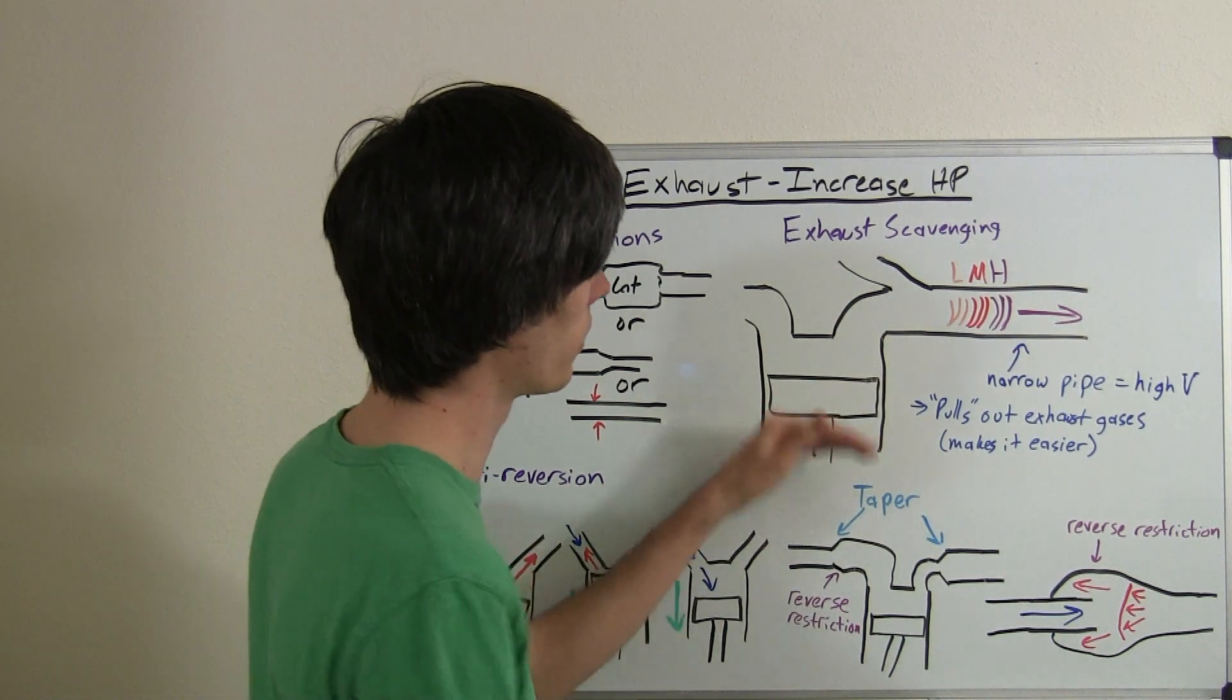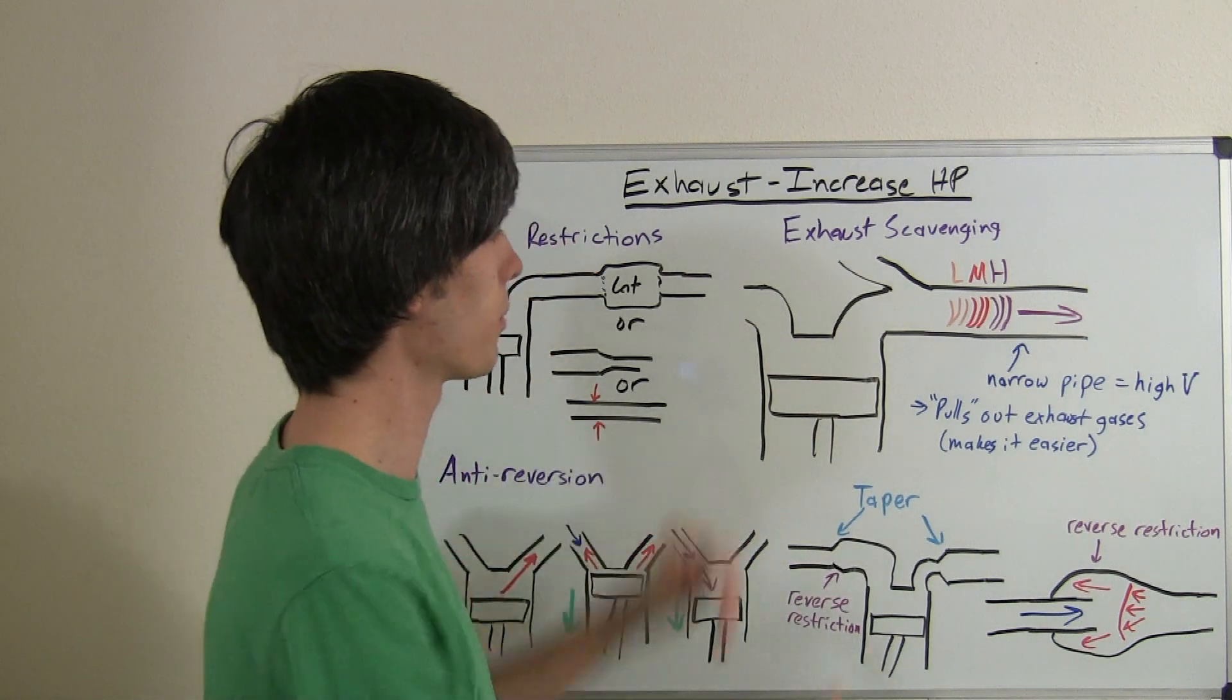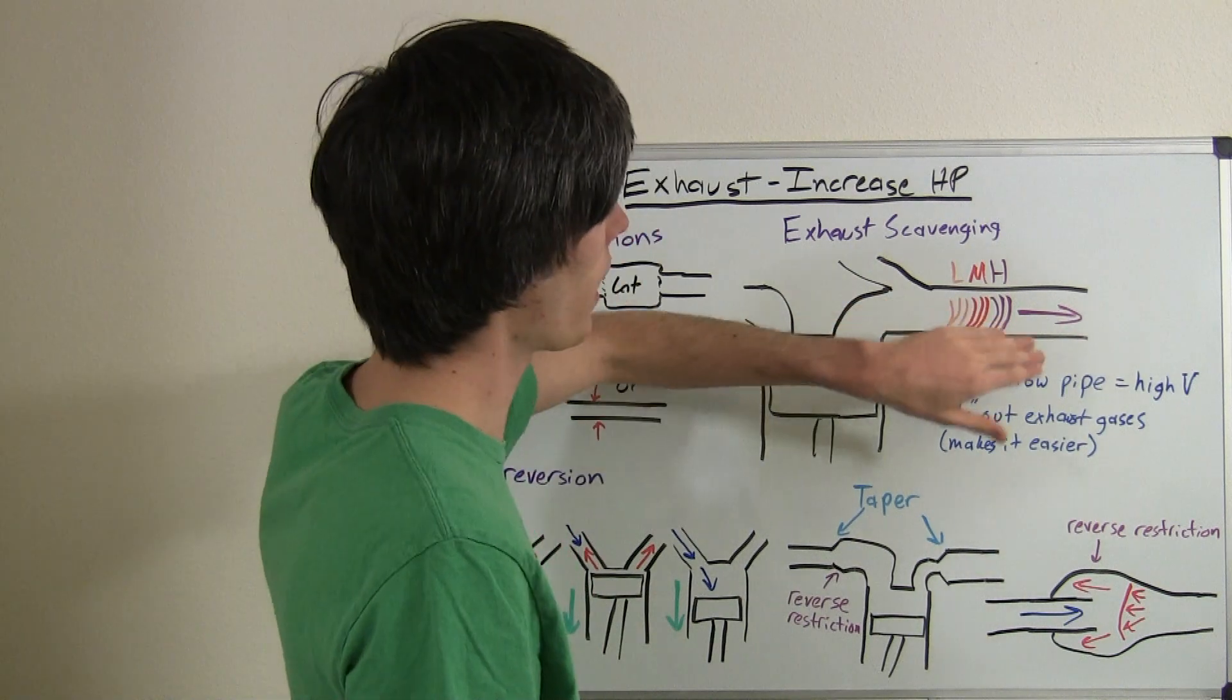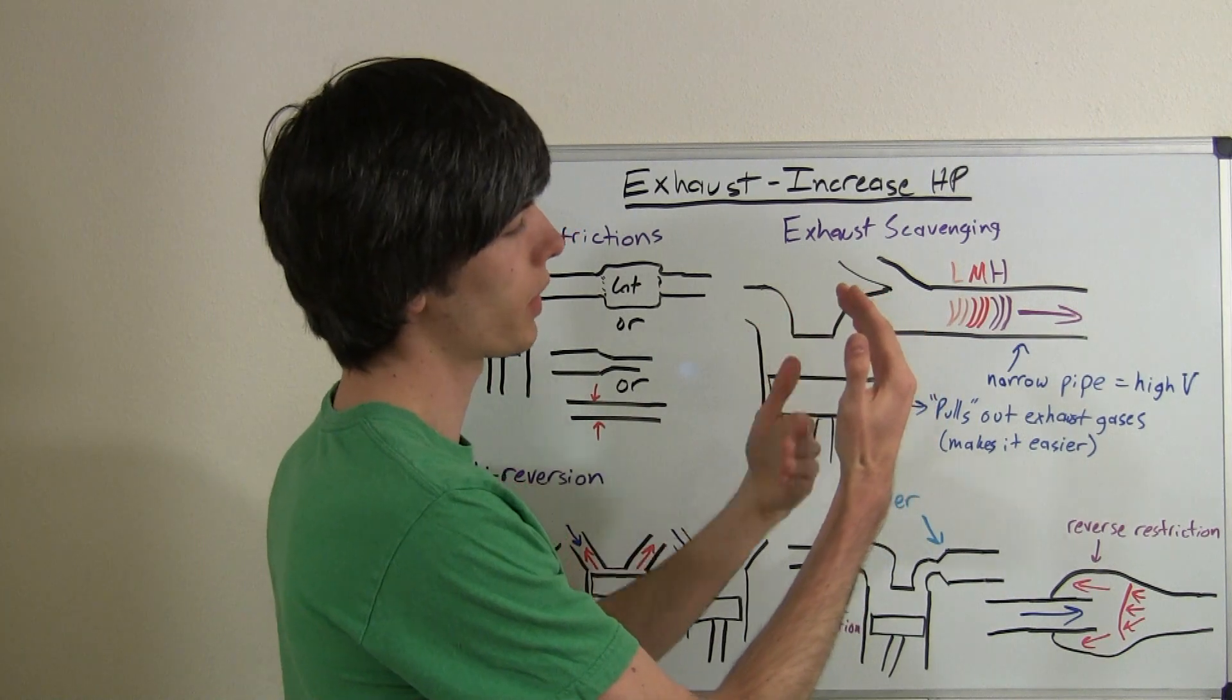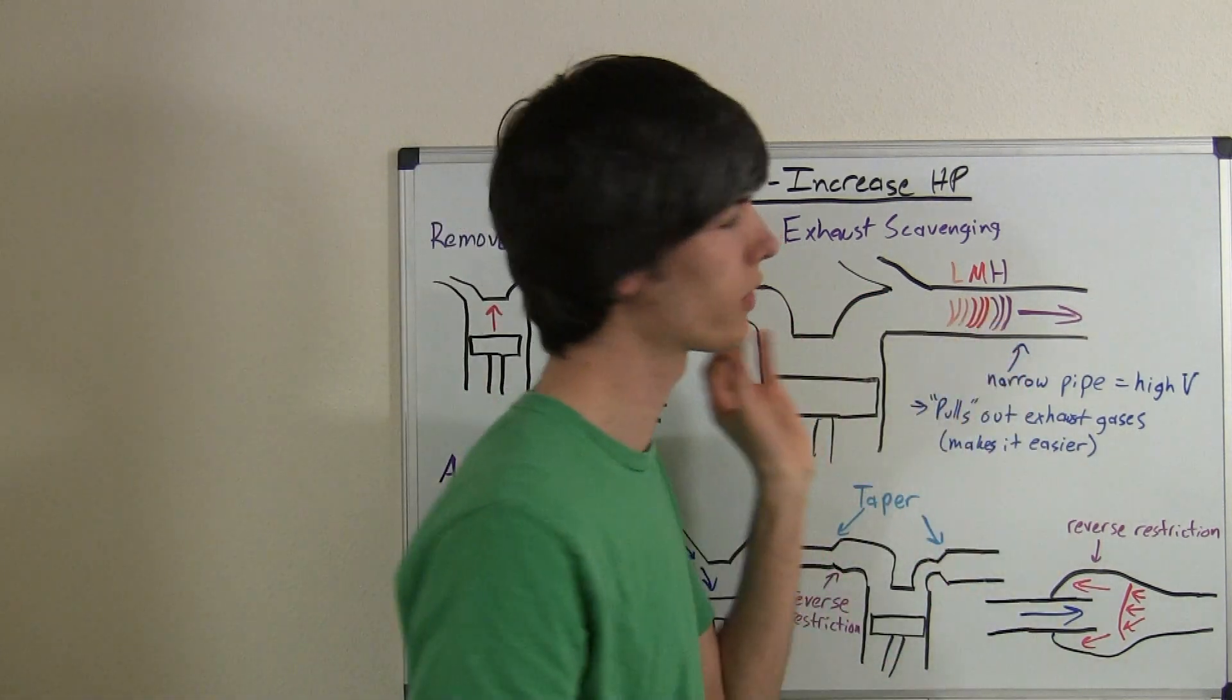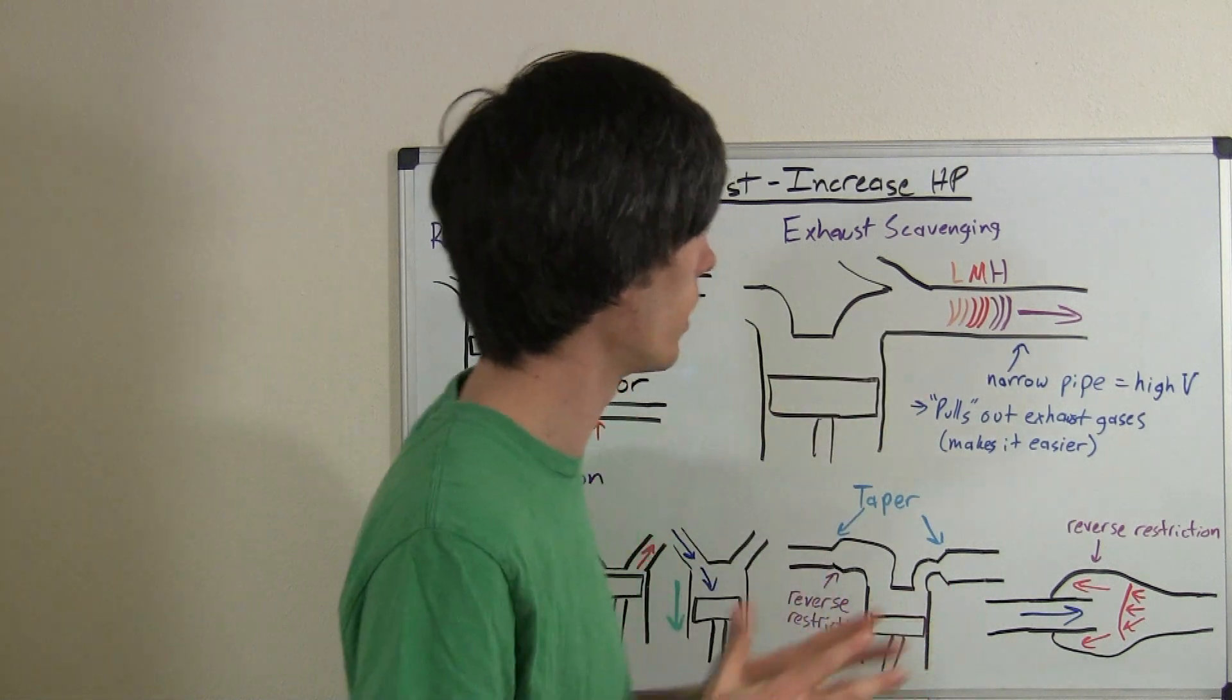With exhaust scavenging what happens is you're going to have exhaust gases pump out of your car in pulses. So once the piston slams up it's going to send out this pulse of air basically. And that pulse of air, since it's traveling very quickly, at the front of it it's basically going to have a high pressure area, and then a medium pressure area, and then a low pressure area. And that low pressure area is basically acting like a vacuum, helping to pull out all of the gases from the exhaust. And that's a good thing. That's what you want.